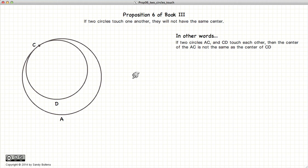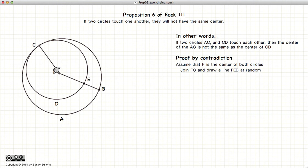So again we are going to prove this by method of contradiction. Let's assume that F is the center of both circles CD and CA. Join FC and draw a random line from FEB.